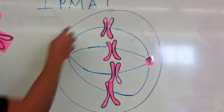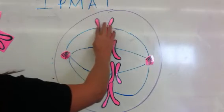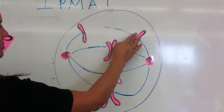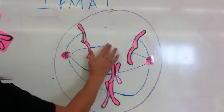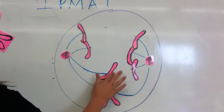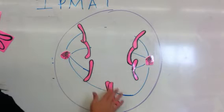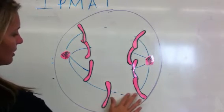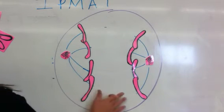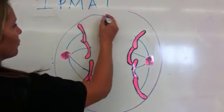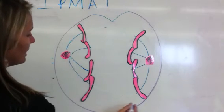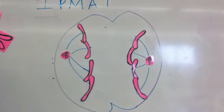Because during anaphase, the next step, they're going to start to pull apart. So chromosomes pull apart during anaphase. Like so. Here's your anaphase. Now during anaphase, the cell begins to furrow or cleave. Like so.